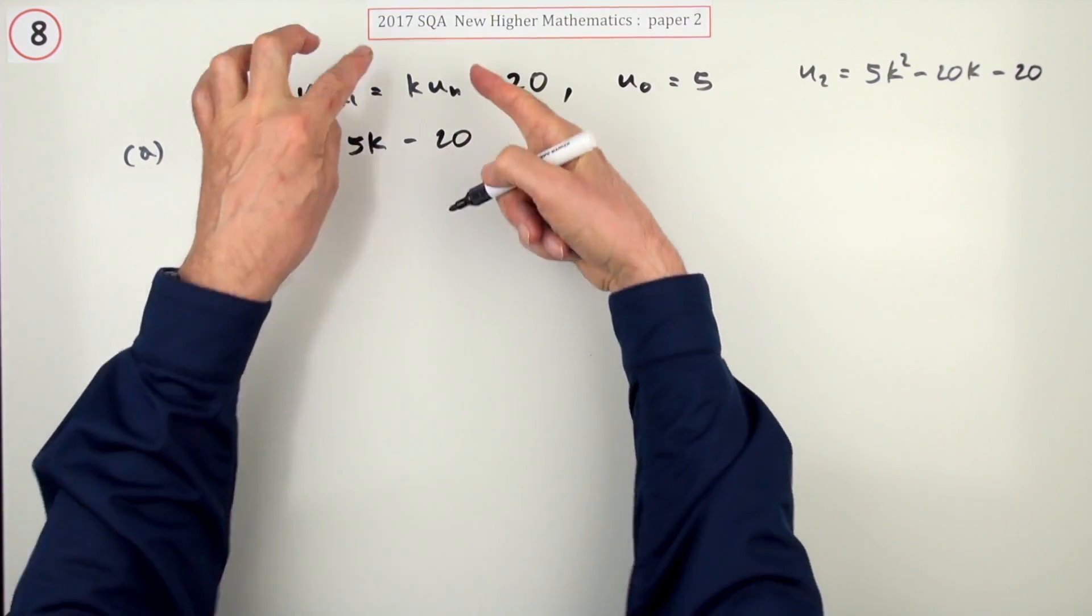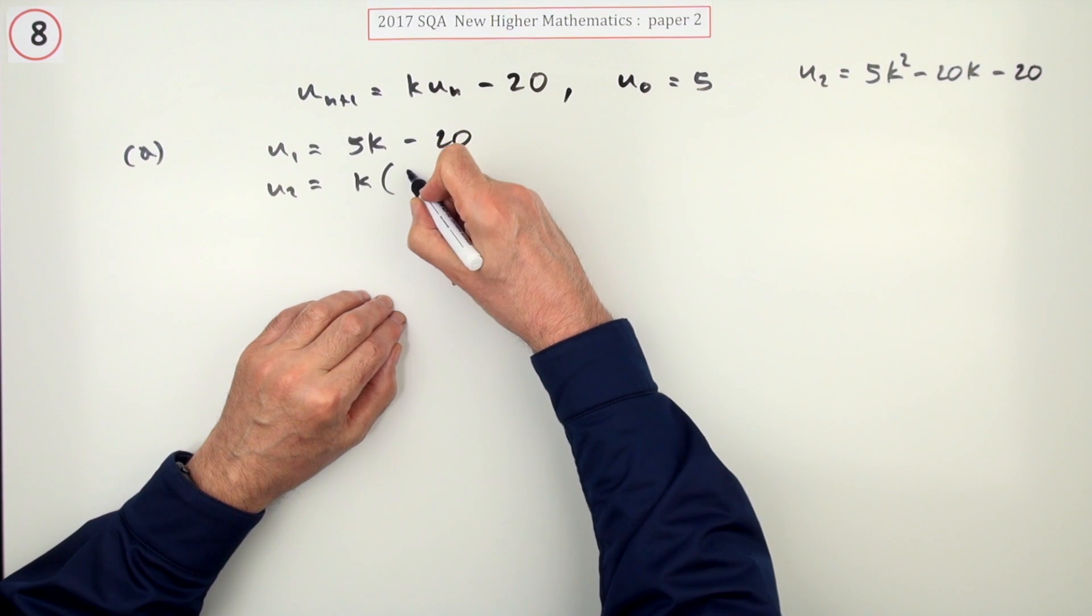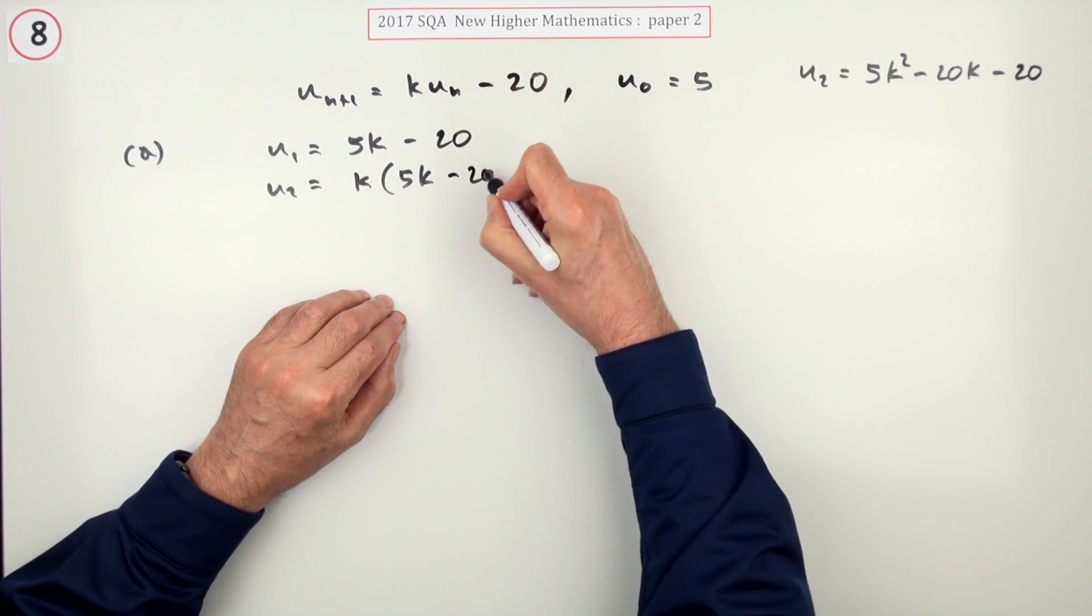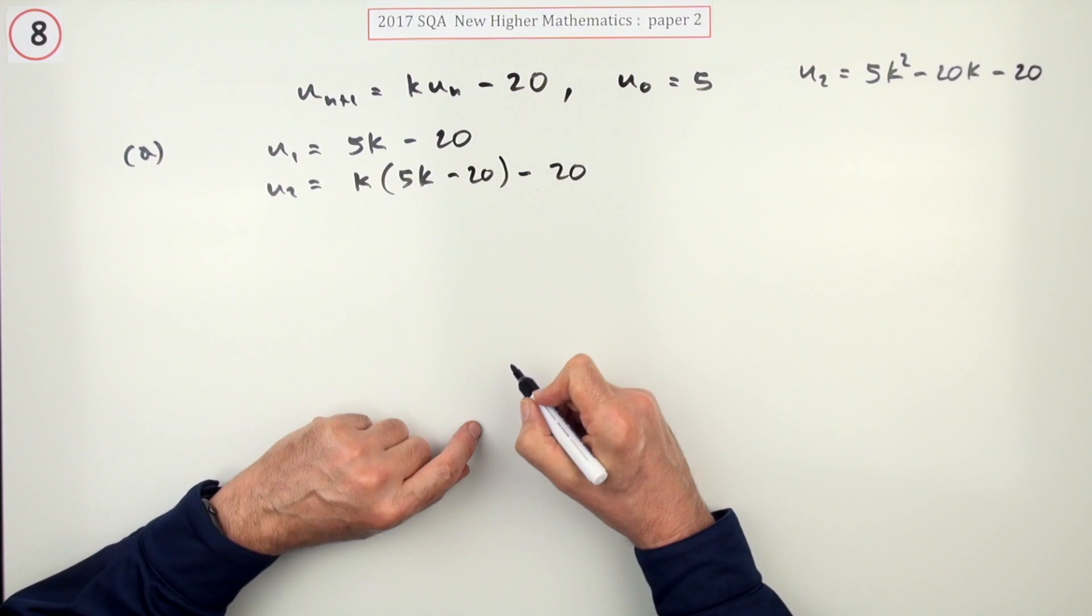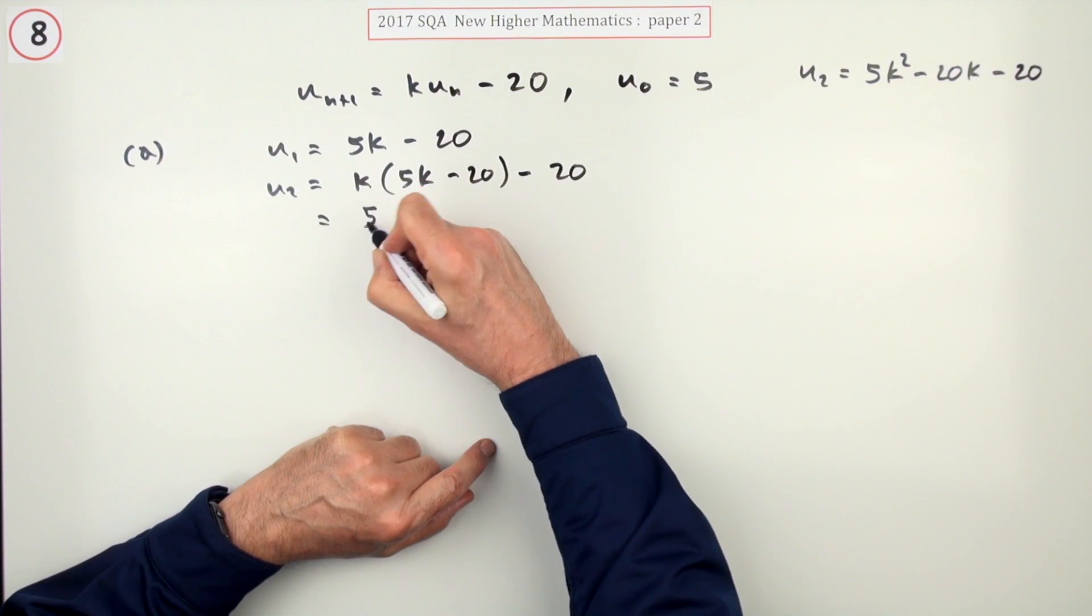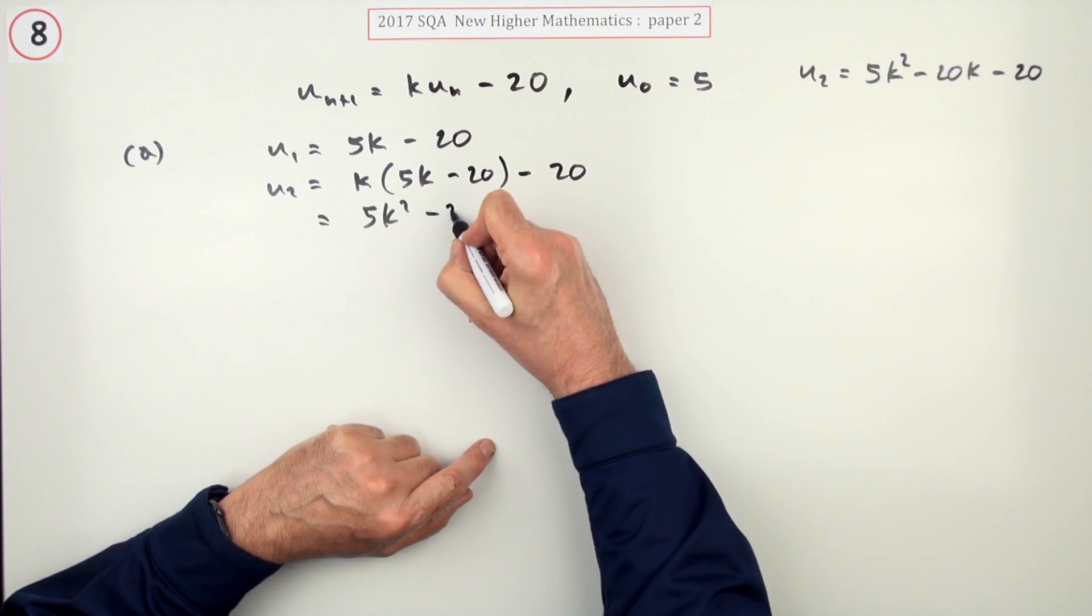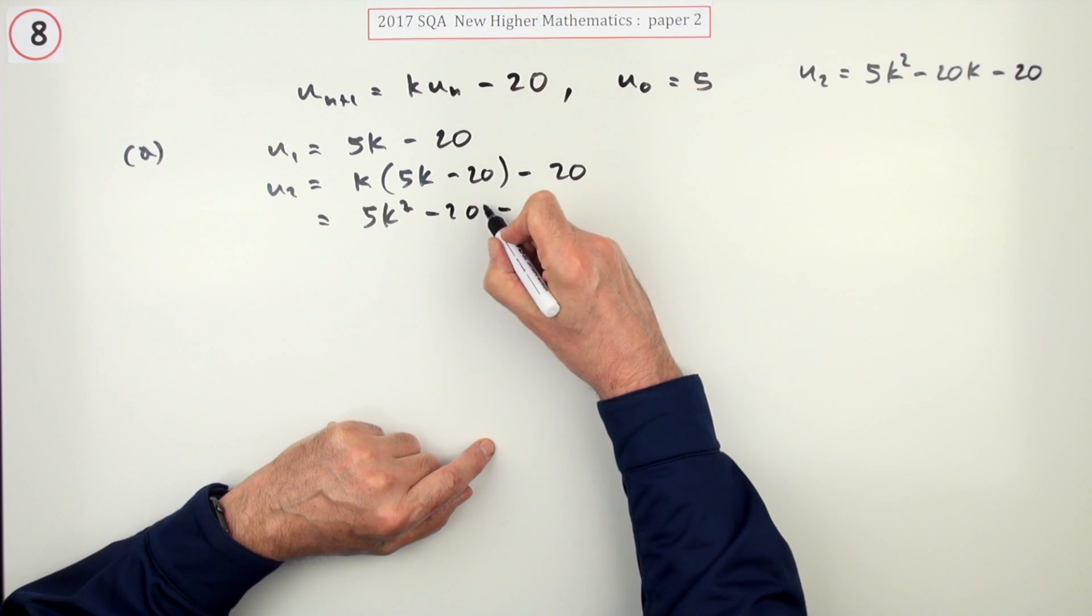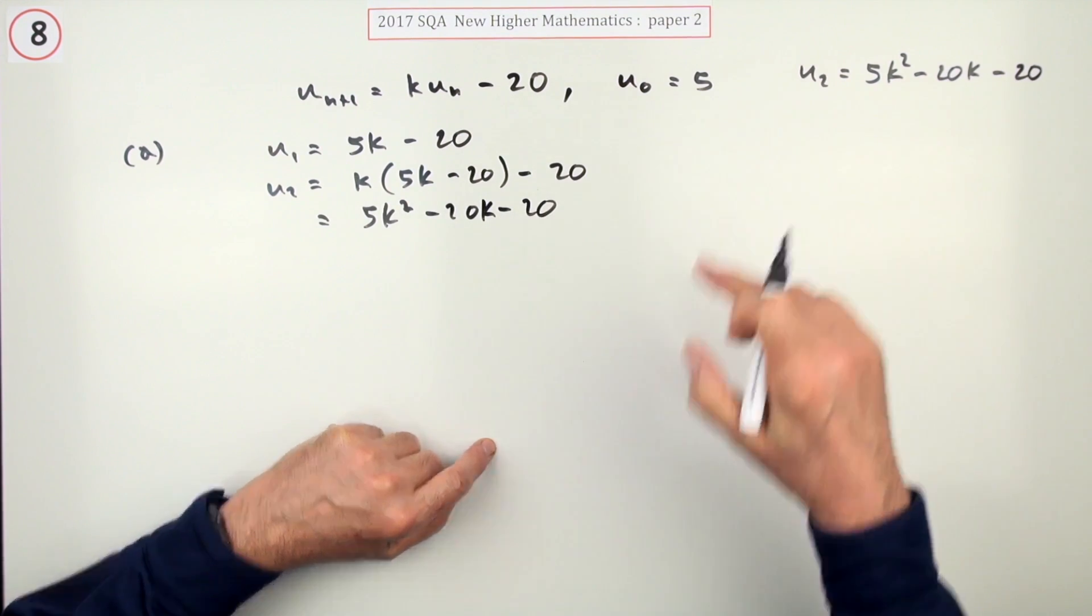u2 will be now feeding this into it, so it'll be k times that, k times (5k minus 20), take away another 20. So that's 5k squared minus 20k minus 20, as required.